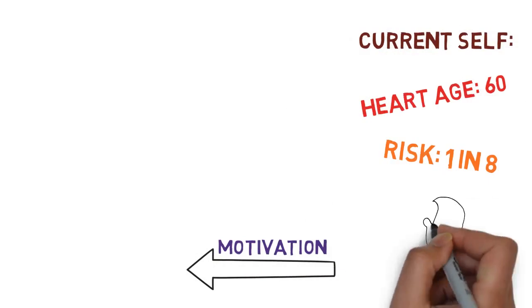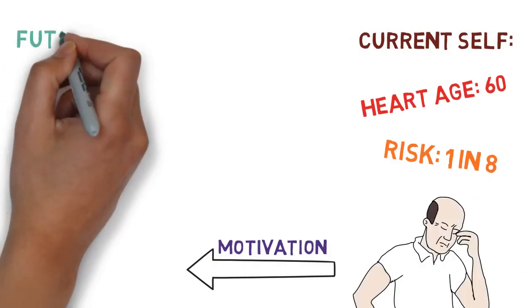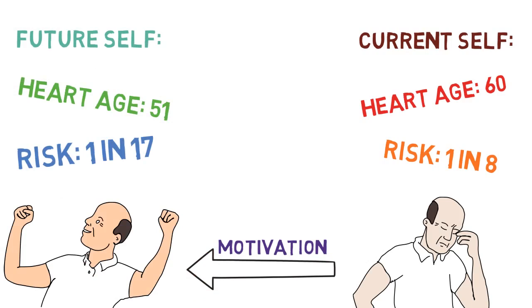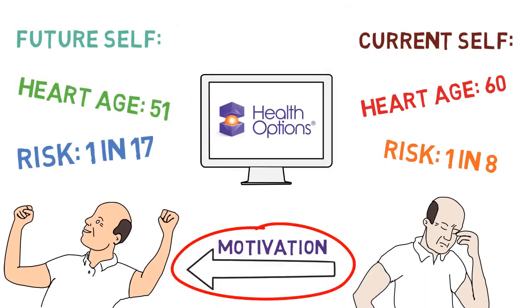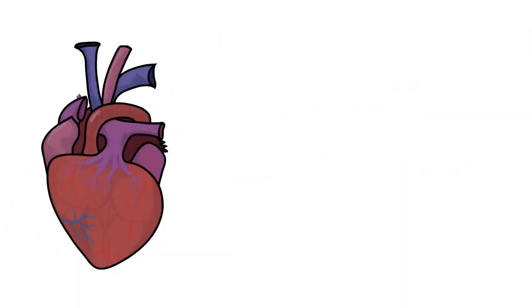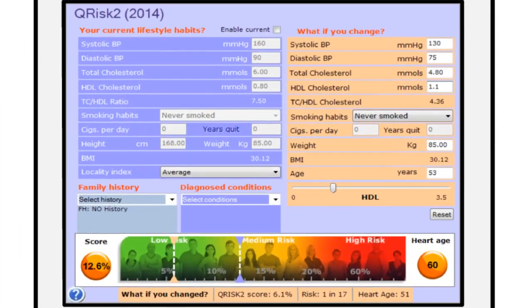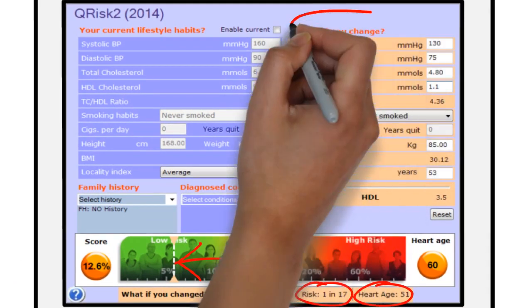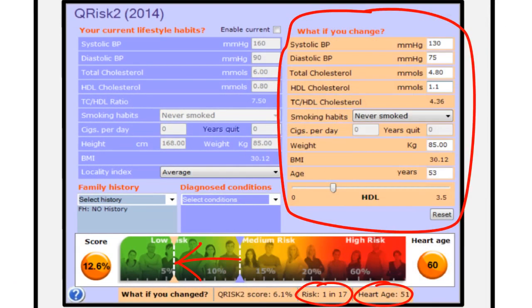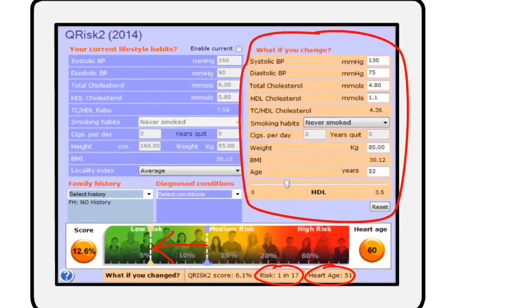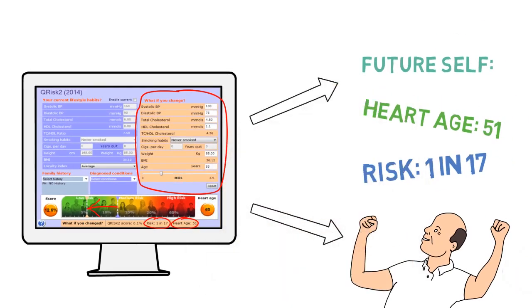As we explored in the last video, motivation is often led by a difference between where someone sees their current self in relation to a potential future self. Health Options software particularly lends itself to this process of developing discrepancy. In the context of a cardiovascular health check, it can be harnessed to demonstrate precisely how things could be different. By using the what if you change scenario, the tangible effects of behavior change can be demonstrated.